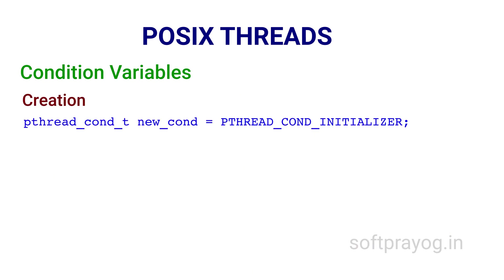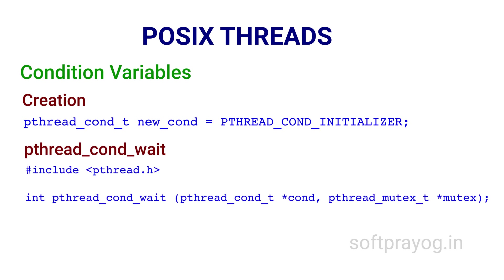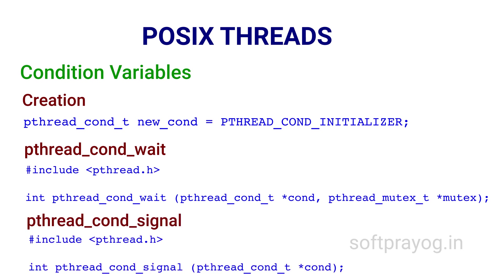Now we look at the pthreads function calls for condition variables. The simplest way to get a condition variable is to define it as a global variable and initialize it with PTHREAD_COND_INITIALIZER. There are two basic calls: pthread_cond_wait and pthread_cond_signal. pthread_cond_wait takes two parameters — pointers to the condition variable and the mutex respectively. It blocks on the condition variable; as soon as the call is made the mutex is released, and at the end of the call the mutex is locked and owned by the calling thread. pthread_cond_signal signals the condition variable pointed to by cond.